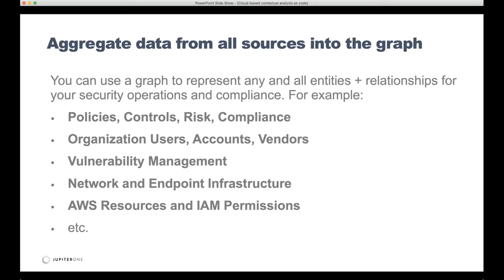So a few things we can do with the graph. This is the data we collect into a graph data model. It's not just the typical IT assets people think about. We have graph objects representing anything related to our security operations, compliance programs, and overall digital operations. We're very cloud native and digital. There are lots of APIs we can leverage to build this, and anything that's not API driven we can still manually script into the graph database. It covers anything from policies, risks, organization users, accounts, vendors, vulnerability findings, endpoint resources, network resources, agents on hosts and servers, and resources in AWS infrastructure.